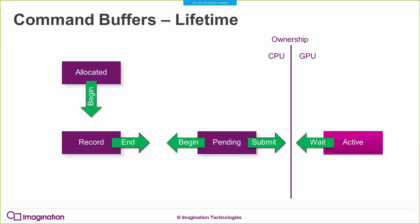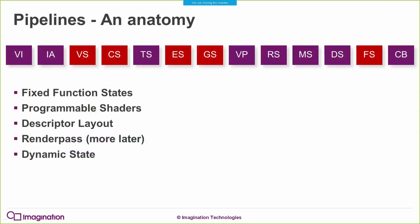Just a brief word on lifetimes. When you allocate a command buffer, until the point you submit it, that command buffer belongs to the CPU - to the application. You can record into it, reset it, or free it. However, once you've submitted it to the GPU, it now belongs to the GPU - don't touch it. The API will not stop you, but if you do, something will almost definitely go wrong. You can wait on that command buffer until it's completed on the GPU, and once it has, it's in the CPU domain again and you can do whatever you want.